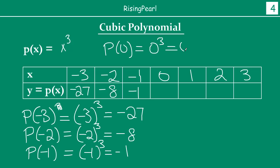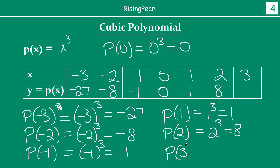Now for p(1) you will have 1³ which is 1, so this is 1. For p(2) it will be 2³ which is 8, this will be 8. And for p(3) you will get 3³ which is going to be 27.